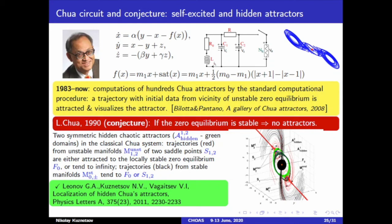Since Chua's experiments started from zero initial state, he conjectured that if the zero equilibrium is stable, then there are no chaotic attractors in the model. Since that time, more than 10,000 papers have been published in which hundreds of different Chua attractors have been found, and all of them until recently were self-excited. In 2009, working on the Kalman conjecture and developing the harmonic balance method, we found the first hidden Chua attractor. We considered circuit parameters such that the zero equilibrium is stable and trajectories from the vicinity of symmetric saddle stationary points tend to infinity or to the stable zero equilibrium, but still there are two symmetric hidden attractors in the phase space.